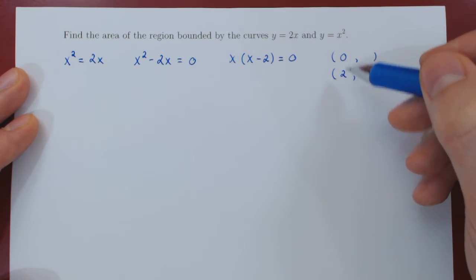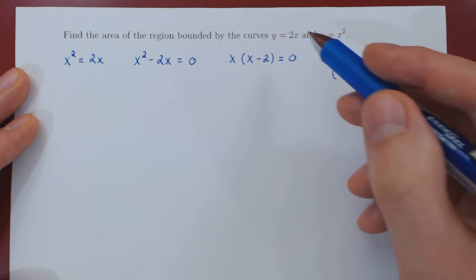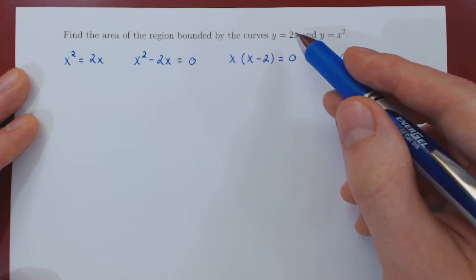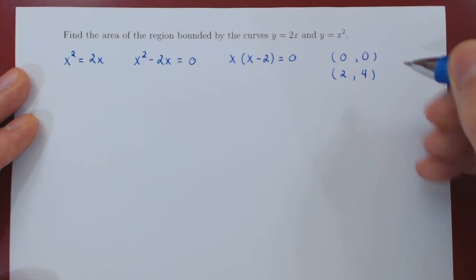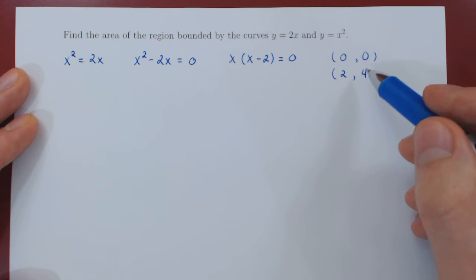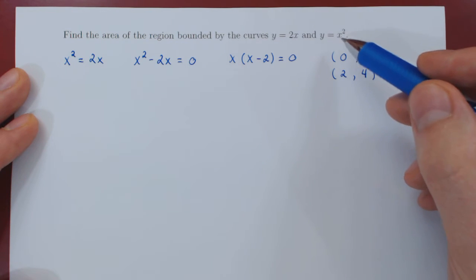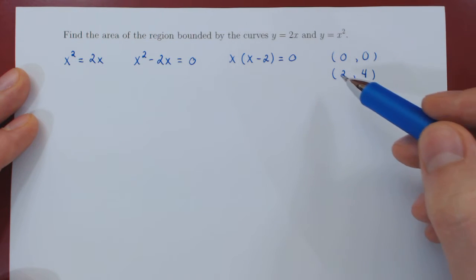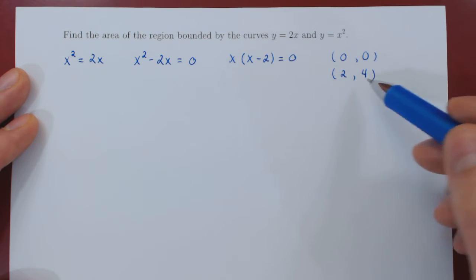So now we have the x coordinates of our points of intersection. To find the y coordinates, you can use either curve. So 2x, 2 times 0 is 0, 2 times 2 is 4, and you can verify that these are accurate as they should be solutions to both curves. So let's try with the second curve. 0 squared is 0, 2 squared is 4. So a simple way to check that you have found the correct points of intersection.